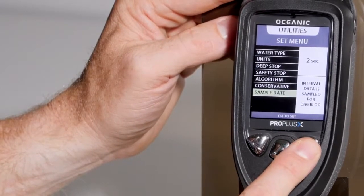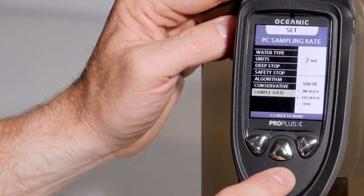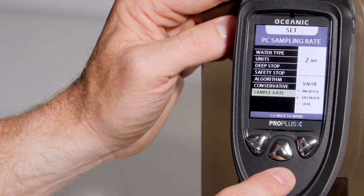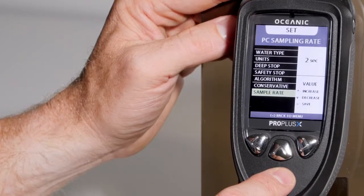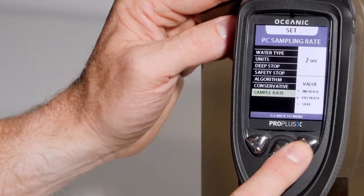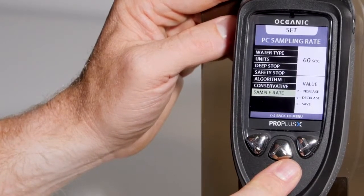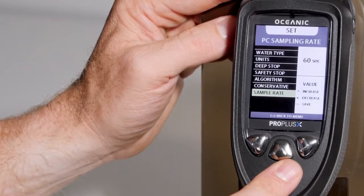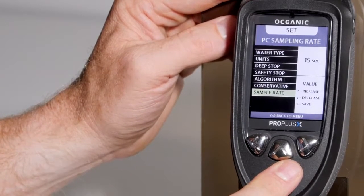Sample rate is for the downloading of the computer. On a 2-second sample rate, you are going to get roughly 160 minutes of available dive time before the computer starts overwriting the older data. 60 seconds will give you roughly 40 hours. 30 seconds will give you 20 hours. 15 seconds will give you roughly 10 hours.